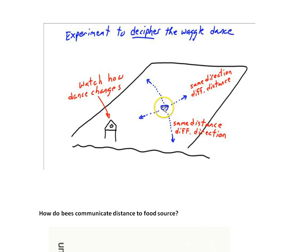Alternatively, you could keep the direction the same and change the distance of the food. And always what you're doing is you're comparing the new dance to the previous dance. So you want to see how the dance changes as you systematically change the location of the food.